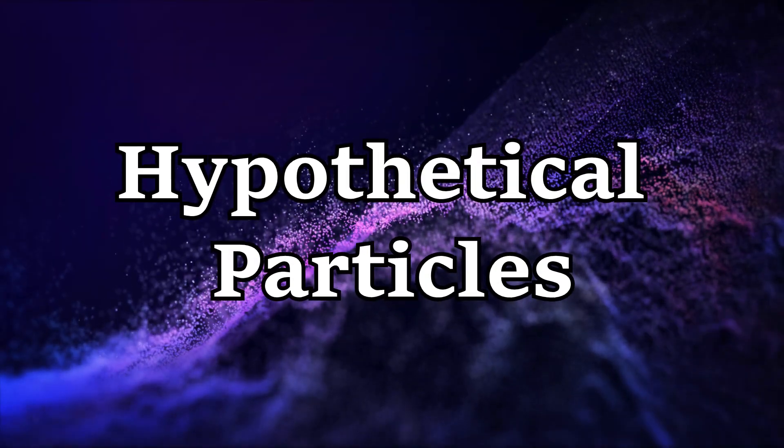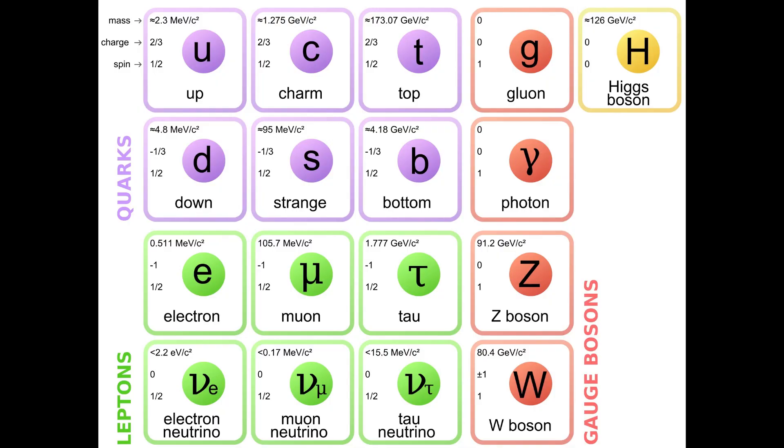Hypothetical particles. Strangelets are small pieces of strange matter around the size of a nucleus that can be exposed when neutron stars are formed or when two collide. The particle consists of a bound state of roughly equal numbers of up, down, and strange quarks.